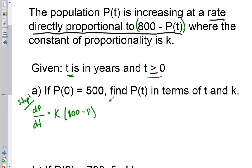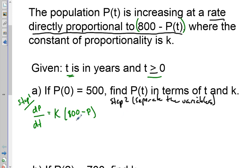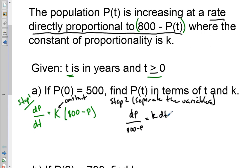Step two is to solve this differential equation by separating variables. When you separate variables, the P terms go on the left side and the T terms go on the right side. K is a constant — we know that because it says constant of proportionality — so we get dP over (800 - P) = K dT.